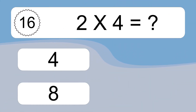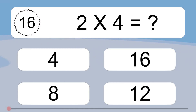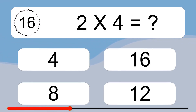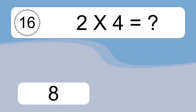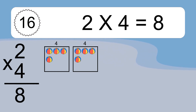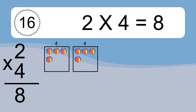2 times 4 equals what? We have 2 boxes, and each box has 4 colorful balls inside. If you count all the balls in all the boxes together, you will have 2 times 4 balls. This equals 8 balls.